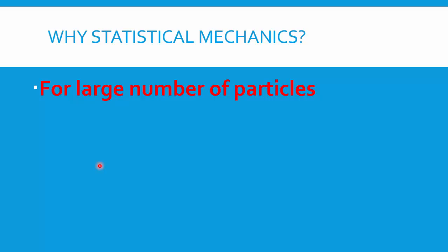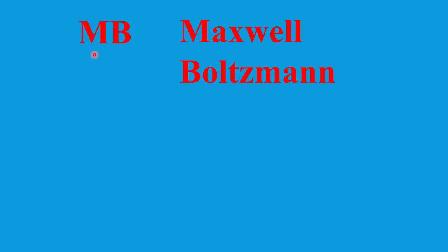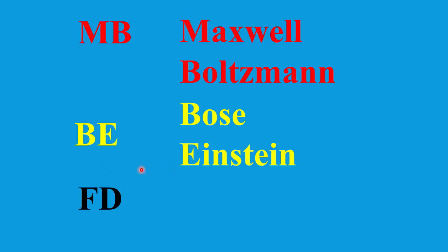Statistical mechanics tries to determine the position, time, velocity, and acceleration for all particles. It also forms a link between thermodynamic quantities such as pressure, temperature, and entropy for all particles in the system with their position and velocity parameters. In statistical mechanics there are basically three statistics: Maxwell-Boltzmann (MB) statistics, Bose-Einstein (BE) statistics, and Fermi-Dirac (FD) statistics.